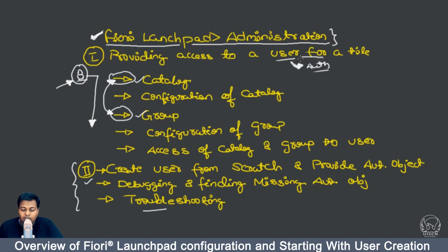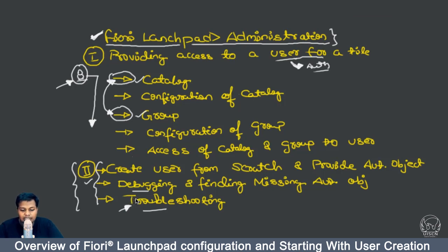In the next section, we will be creating a user from scratch and trying to work through what authorizations are missing — finding that out by debugging and then assigning those authorization objects. If you have access to a Fiori guide, that will be very easy, but I always recommend developing troubleshooting techniques and hands-on skills, because most of the time you will be in the middle of an authorization error and it will be difficult to identify exactly which authorization object is missing.